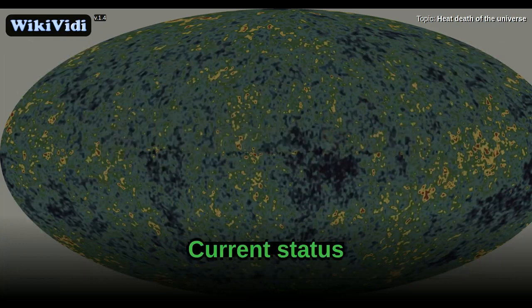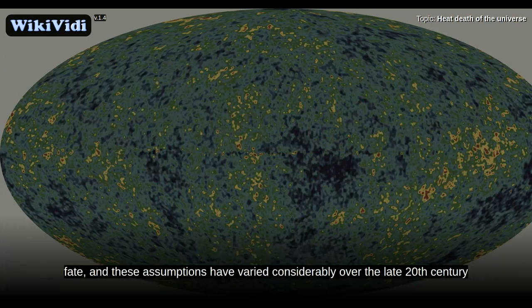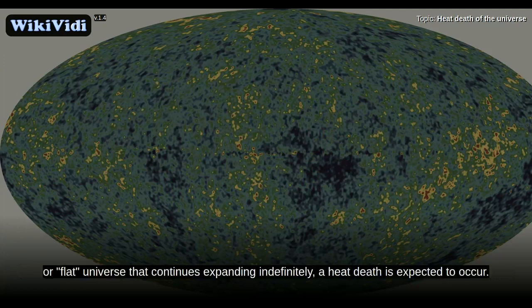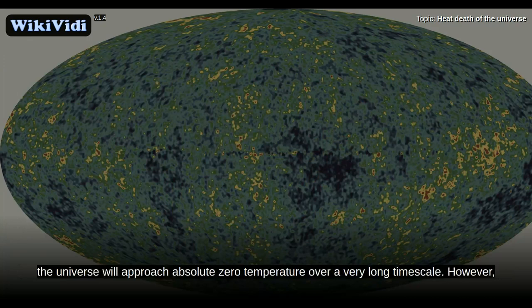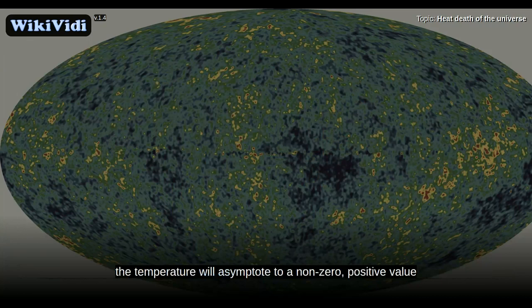Current status. Proposals about the final state of the universe depend on the assumptions made about its ultimate fate, and these assumptions have varied considerably over the late 20th century and early 21st century. In a hypothesized open or flat universe that continues expanding indefinitely, a heat death is expected to occur. If the cosmological constant is zero, the universe will approach absolute zero temperature over a very long timescale. However, if the cosmological constant is positive, as appears to be the case in recent observations, the temperature will asymptote to a non-zero positive value, and the universe will approach a state of maximum entropy.